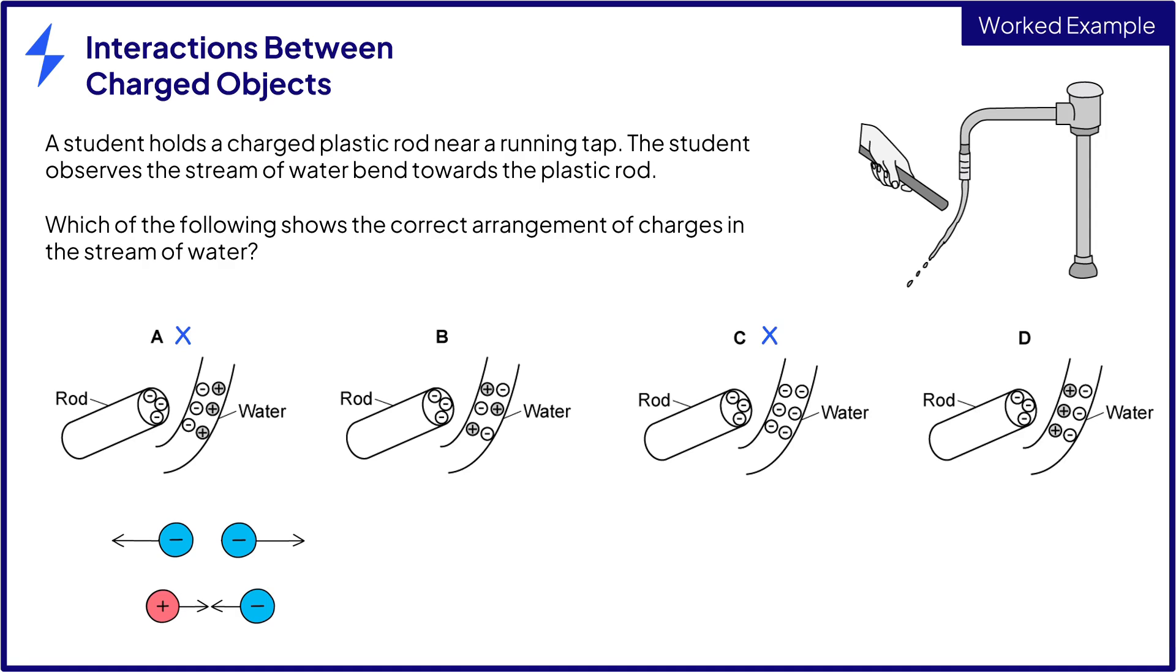B is showing a pretty equal spread of positive and negative charges, so that's not really showing attraction or repulsion. So we can also discount B.